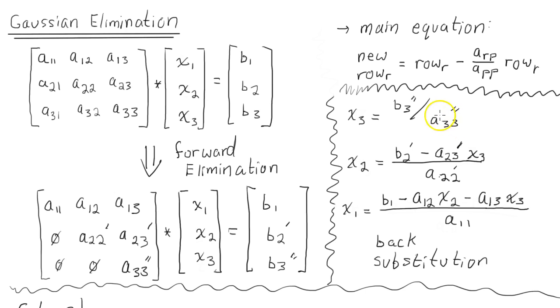So these are all the equations you need for a 3x3 matrix for back substitution. But the hard part is forward elimination. And it's governed by this main equation, which at first is kind of confusing. So that's what I'll go over now.